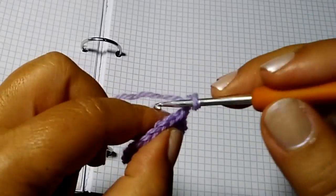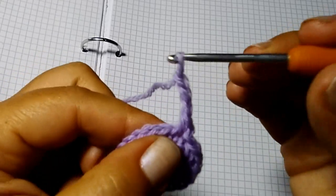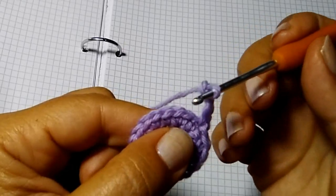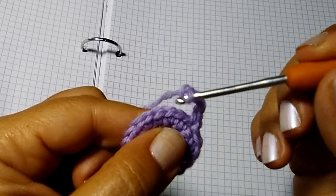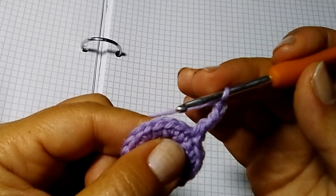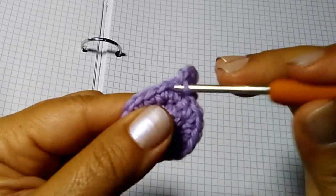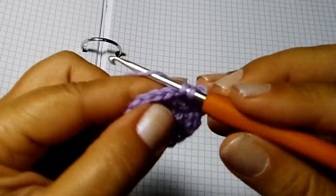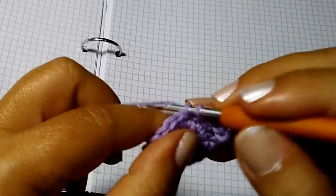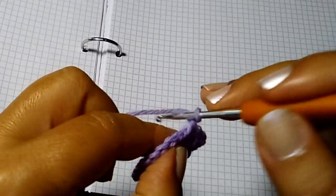Adesso 3 catenelle. Nelle prossime 3 maglie: 3 maglie basse, una maglia bassa in ognuna delle prossime 3 maglie: una, due e tre. 3 catenelle.